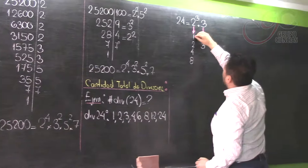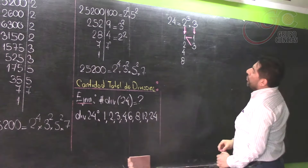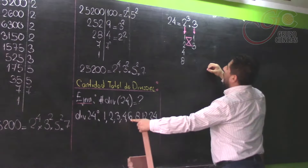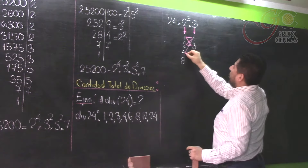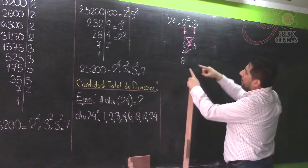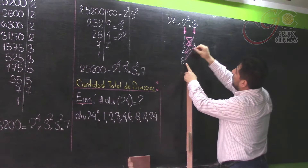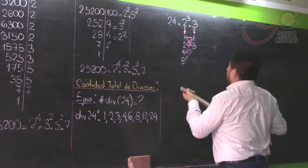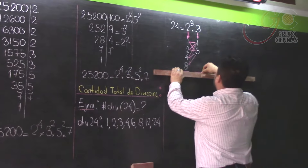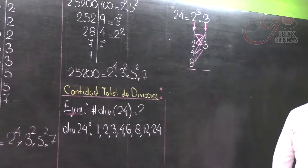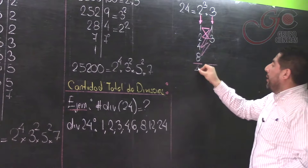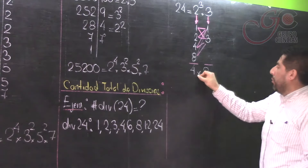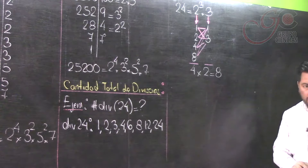Por ejemplo, combinamos: 1×1, 1×3, 2×1=2, 2×3=6, 4×1=4, 4×3=12, 8×1=8, 8×3=24. ¿Cuál es el total de combinaciones? Por el principio de multiplicación: hay cuatro números que serán combinados con otros dos. Total de combinaciones: 4 por 2 es 8. ¿Estamos de acuerdo?